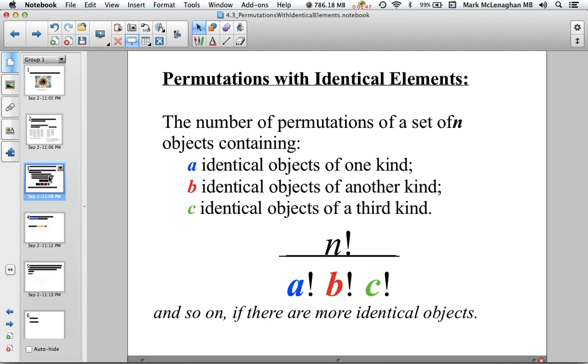So if we go back to our example, we had 24 permutations of ROAM, and if we divide by 2 with the two identical O's in ROOM, you can see that 24 divided by 2 is 12, which is the answer for the number of permutations for ROOM.